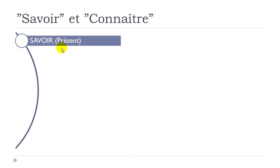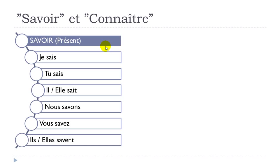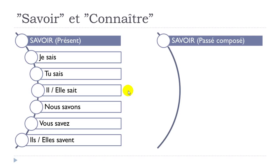Let's remember how to conjugate Savoir at the present tense: je sais, tu sais, il sait, elle sait, nous savons, vous savez, ils savent, elles savent. If you look carefully, je/tu are written s-a-i-s and il/elle are written s-a-i-t, but phonetically these three forms are the same: 'sais.'